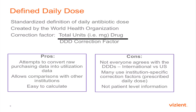A relatively easy metric almost anybody could calculate is the Defined Daily Dose (DDD). Ideally you'd calculate it from utilization data, but if not, use what you've bought — instead of cost, use total grams. That factors into the calculation. In theory, your inventory stays consistent, giving you a surrogate for antibiotic use. This standard was created by the World Health Organization — a group in Norway that came together in the 1960s to figure out a standardized way to measure drug use across different countries.